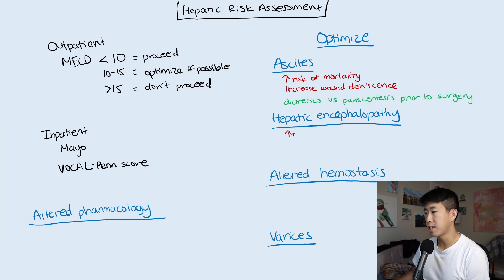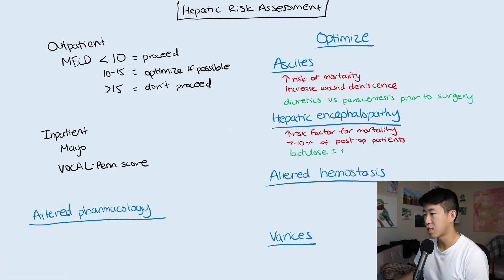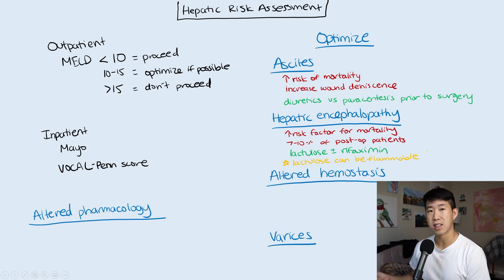Hepatic encephalopathy is also an independent risk factor for increased mortality, occurring in about 7 to 10% of patients in the post-op period. Treat beforehand with lactulose, plus or minus rifaximin. One important note: lactulose may be relatively contraindicated in intra-abdominal surgeries because lactulose can be flammable — you want to avoid it in the days before surgery to prevent a fire in the OR from electrocautery.